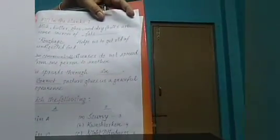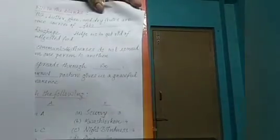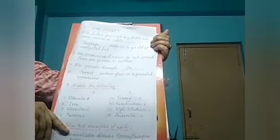All answers are written here — you can note them down. First: milk, butter, ghee and dry fruits are sources of fats. Second: roughage helps us get rid of undigested food. Third: non-communicable diseases do not spread from one person to another. Fourth: flu is spread through air. Fifth: correct posture gives us a graceful appearance.